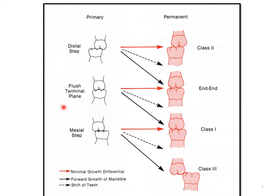For the mesial step relationship seen in the primary second molars: if there is minimal growth differentiation, Class 1 occlusion results; if there is forward growth of the mandible, or if there is a slight mesial shift of teeth, Class 3 occlusion results in the permanent dentition.